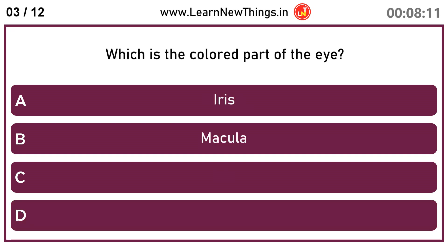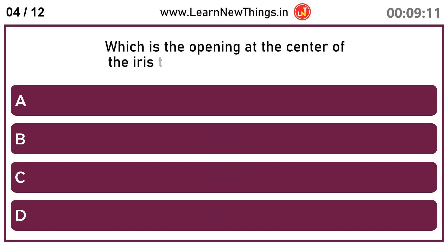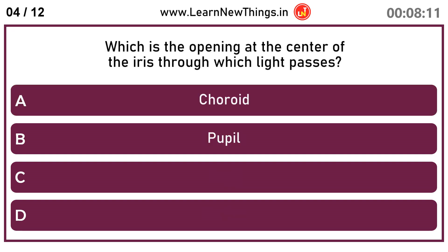Iris, which is the colored part of the eye. Pupil, which is the opening at the center of the iris through which light passes.